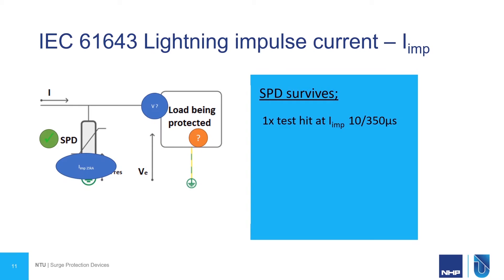IIMP is the lightning impulse current. Again, this is the largest test current that an SPD can survive one time. The difference here is that this is with the 10 over 350 microsecond waveform, so this is for our Type 1 devices where we're protecting from lightning.